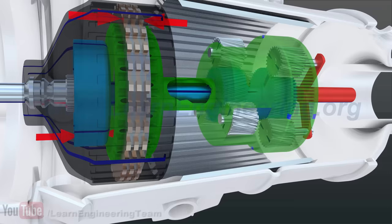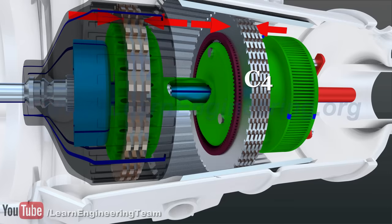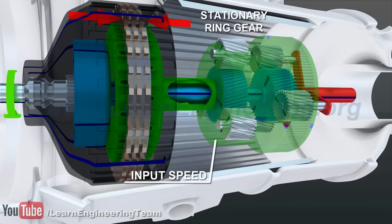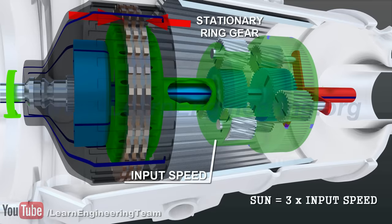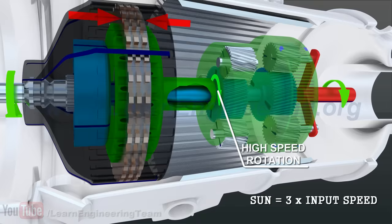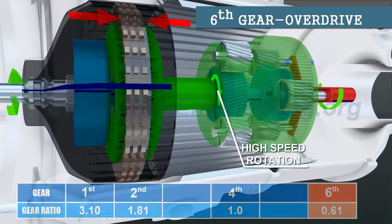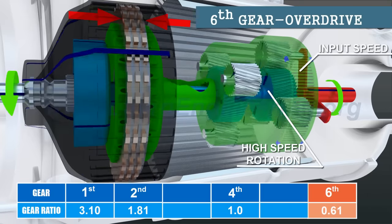In order to achieve the sixth gear, just remove C1 and apply C4. Here at the second set, the input rotation is given to the carrier and the ring gear is stationary. This combination gives a very high rotational speed to the sun. Thus, we can achieve a high overdrive ratio at the output.